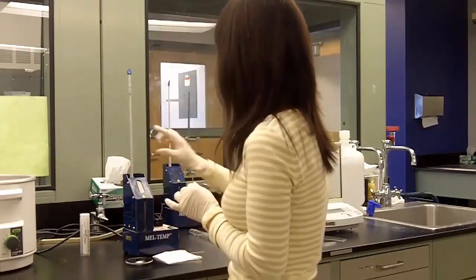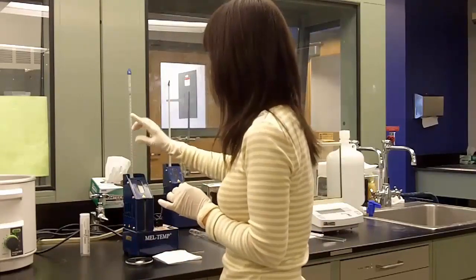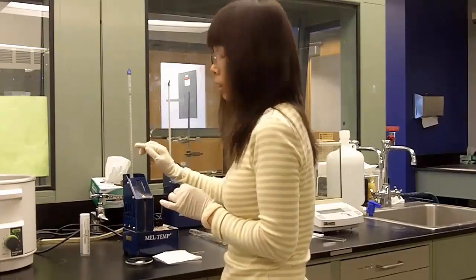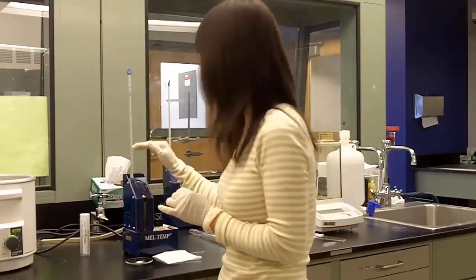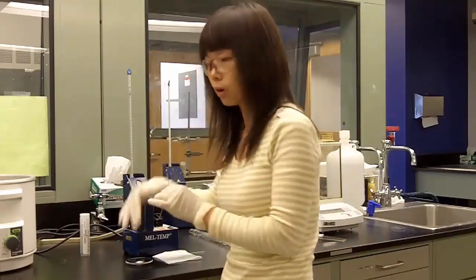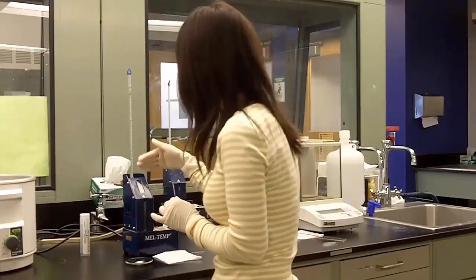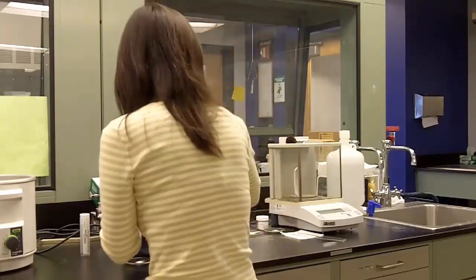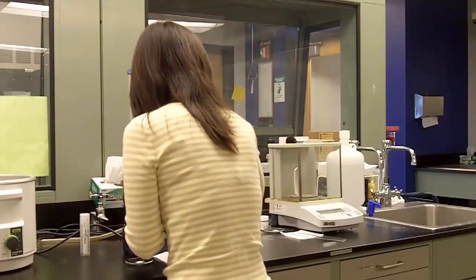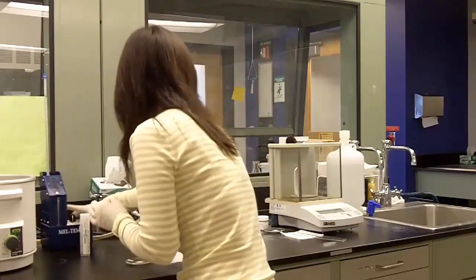And now we put this sample in. Now you need to be careful. If the temperature is still high, you need to wait until the temperature drops about 30 degrees below your melting point. That means the temperature has to be below 70 degrees for our unknown. So the temperature is about 120 degrees now, so it's still very high. And we are going to use a different melt temp to save time.